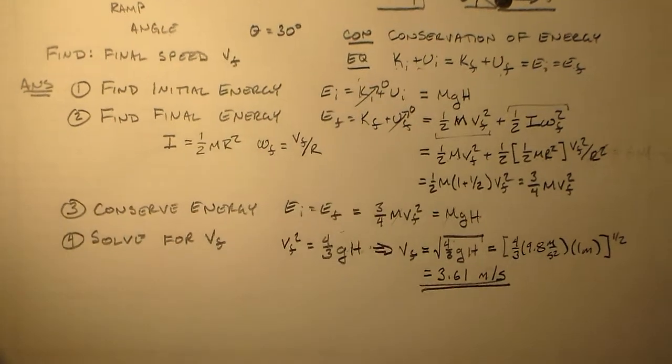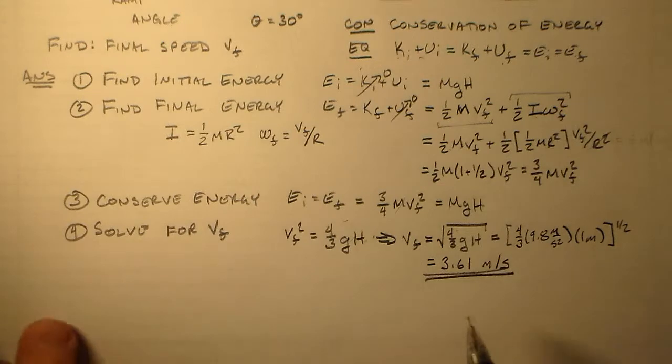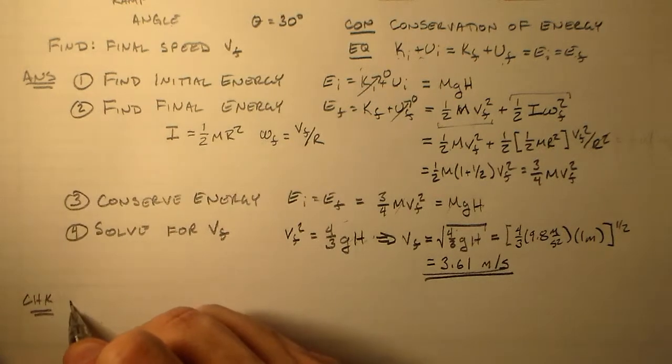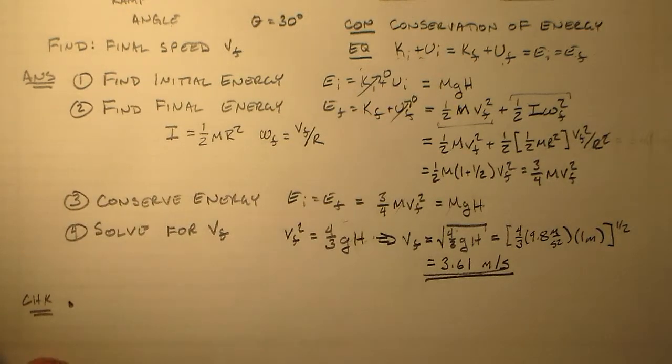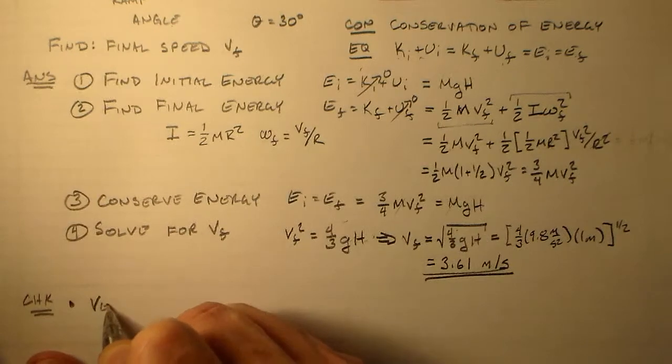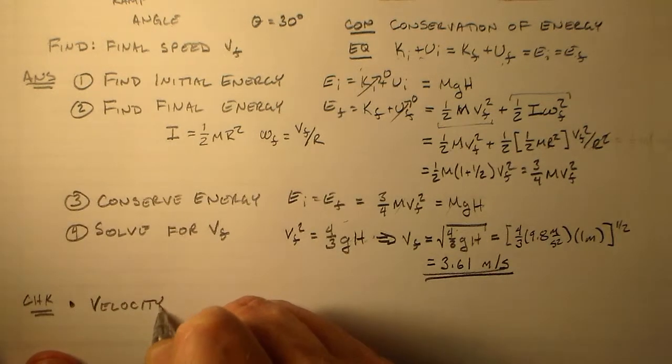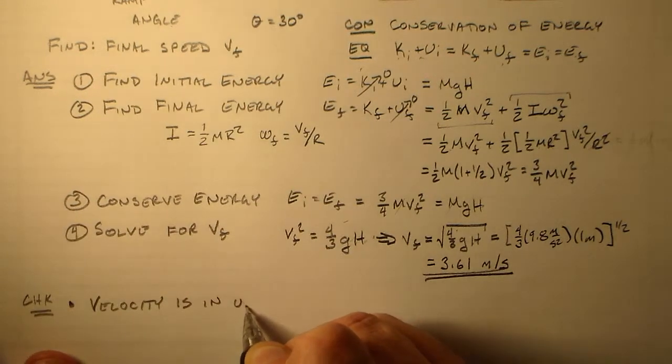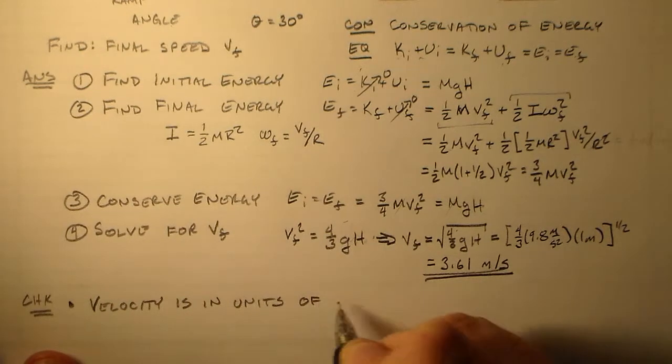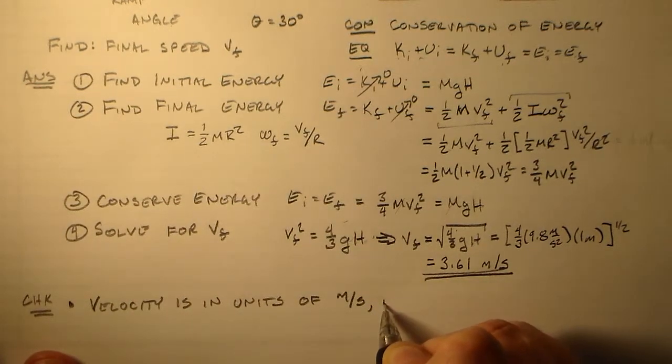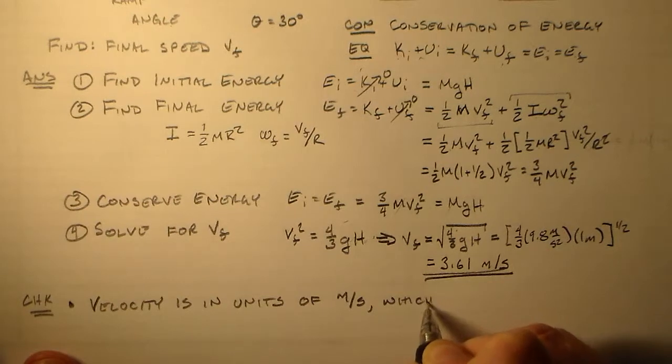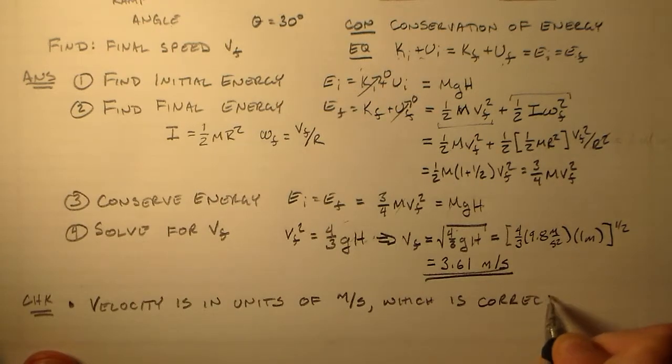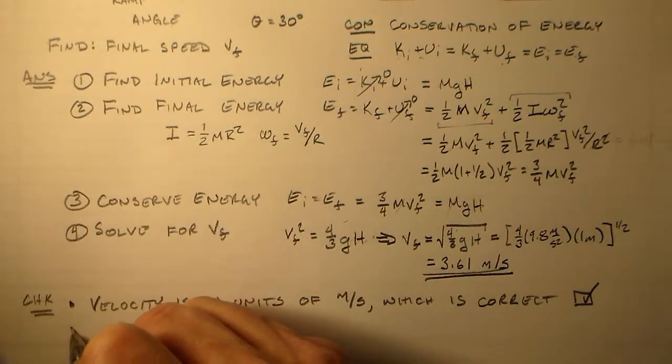So the question is, how far along have we gotten? Is this a good answer or not? And so that's why we do the checks. So the first check, the easiest check usually is to check the units. So the velocity is in units of meters per second, which is correct.